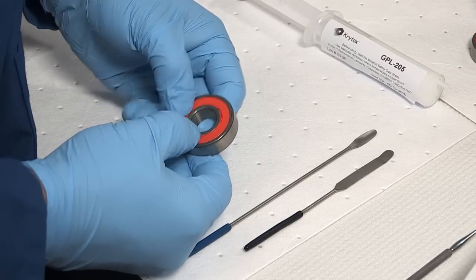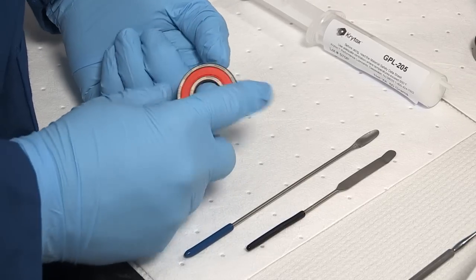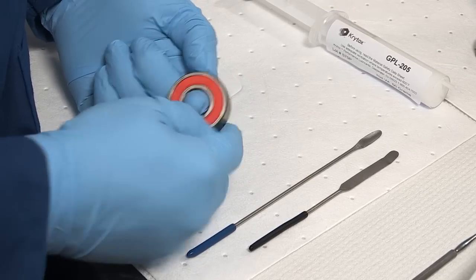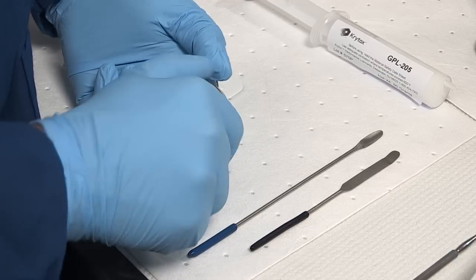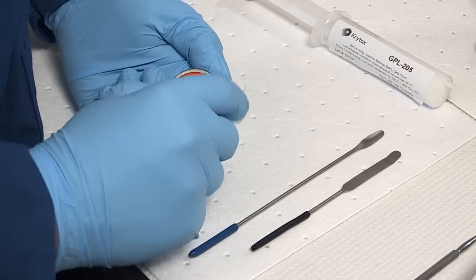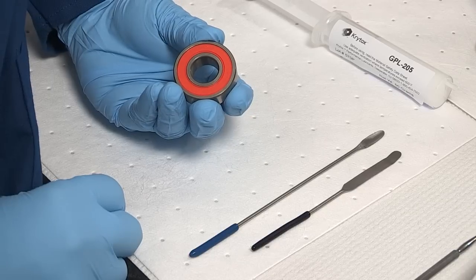Proper lubrication is achieved by using the correct amount of grease. Too little grease in a bearing will cause premature failure. Too much grease in the initial fill or during re-lubrication can cause overheating of the bearing running at medium to high speed.